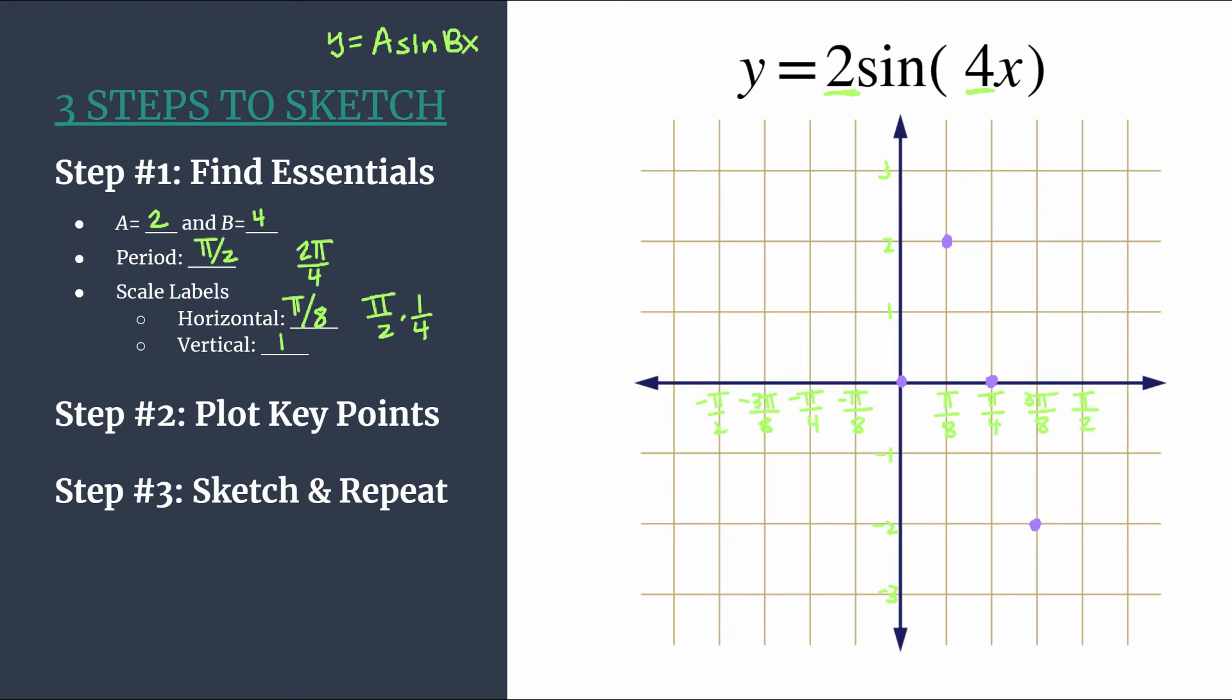Your graph should feel very balanced. And we know that these four points, these key points, are enough to get one cycle of sine for this equation. Let's go ahead and make a light mark that would start the next cycle. That'll restart this pattern with another x-intercept at π over 2. And that's just going to help us as we move into step three, which is to sketch this graph and then repeat.